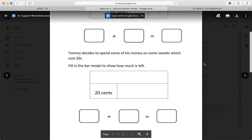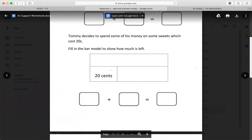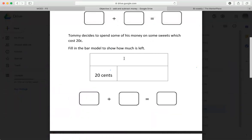Tommy decides to spend some of his money on some sweets, which cost 20 cents. Fill in the bar model to show how much he has left. So we just calculated how much he had altogether. We added 50 plus 15. So that answer would be up here. So 20 plus something will give you how much money Tommy has.